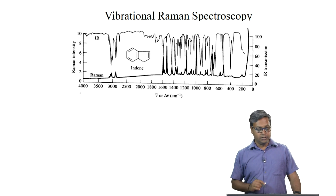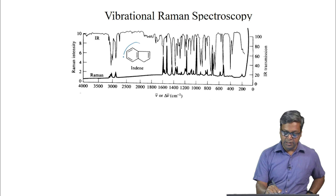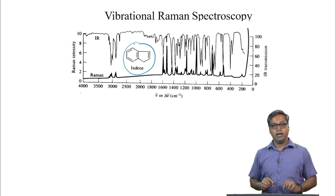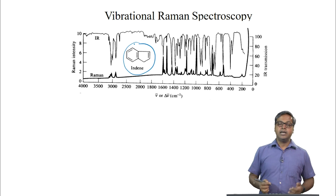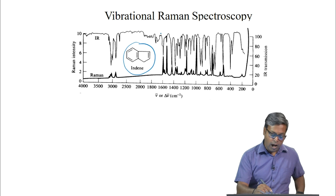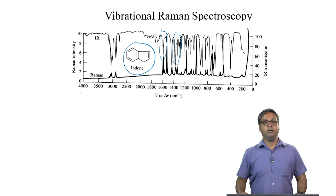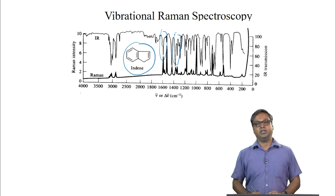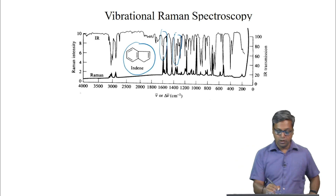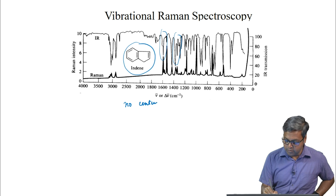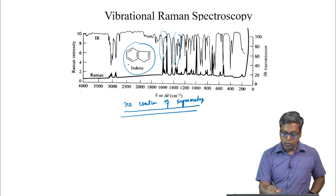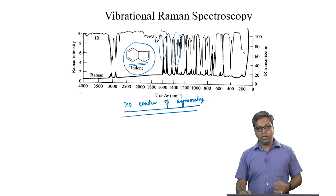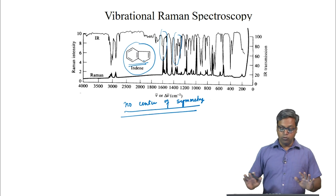Here we see another molecule: indene. We see the IR and the Raman spectra of indene. Different modes are active in both IR and Raman spectra. The immediate conclusion is that the molecule has no center of symmetry, which is also clear if we look at the structure of indene.